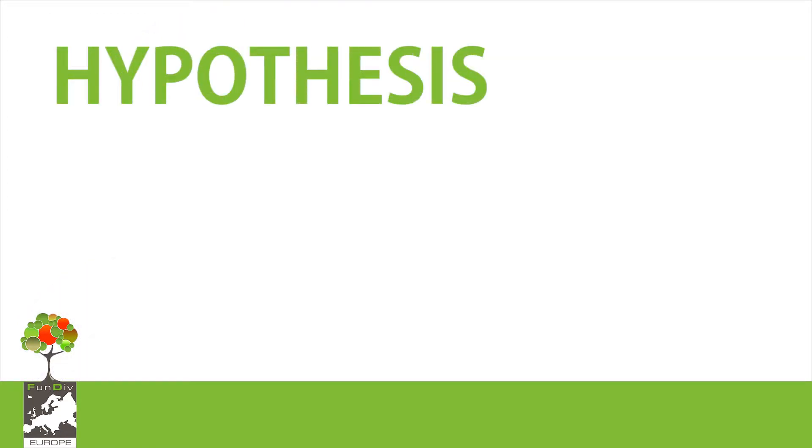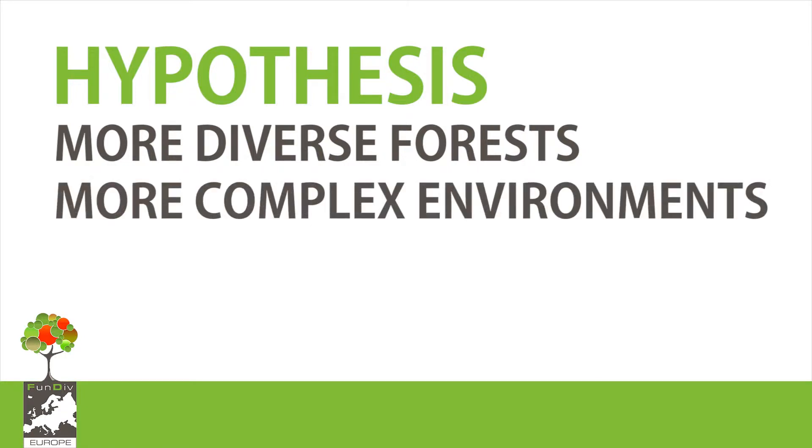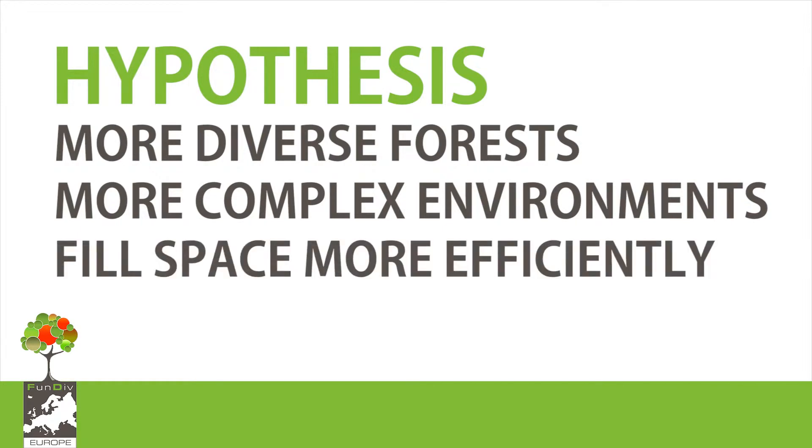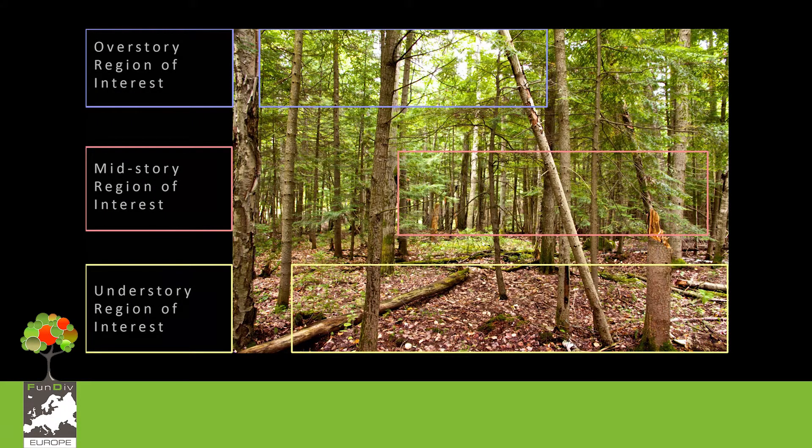The hypothesis that we're testing is that forests with more species or a greater combination of structural traits interact to form more complex environments and thus are acting to fill that space more efficiently. By doing so, the trees would also maximize their light interception and as a result fill the space with more biomass. If this is true, it would help explain why species-rich forests are more productive than species-poor forests.